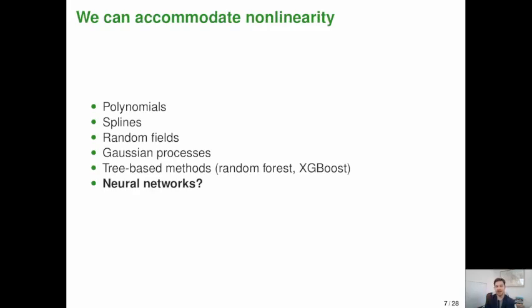That said, you know, we can accommodate non-linearity. There are many approaches that are widely used in ecology that can do this, including polynomials, splines, random fields, Gaussian processes, tree based methods. And this talk is going to be about neural networks, but this is really just one function approximation approach that's thrown on to the heap of existing approaches.